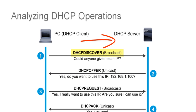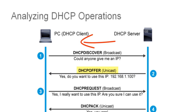The next step is the DHCP offer. When a DHCP server receives a discover message from the laptop, it selects an unused IP address from a pool and sends back a unicast DHCP offer message using UDP port number 68. This offer to the laptop in our example contains an IP address, subnet mask, and lease duration.